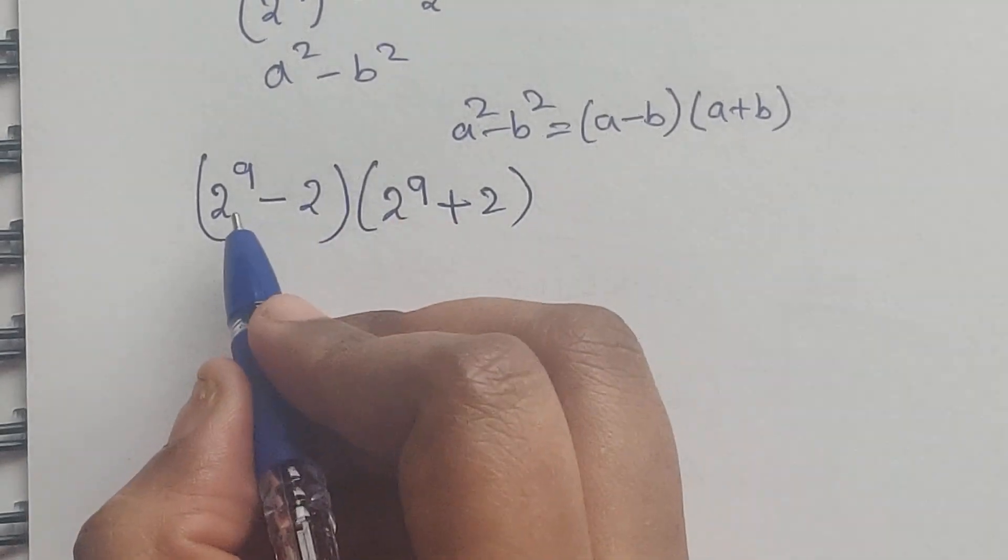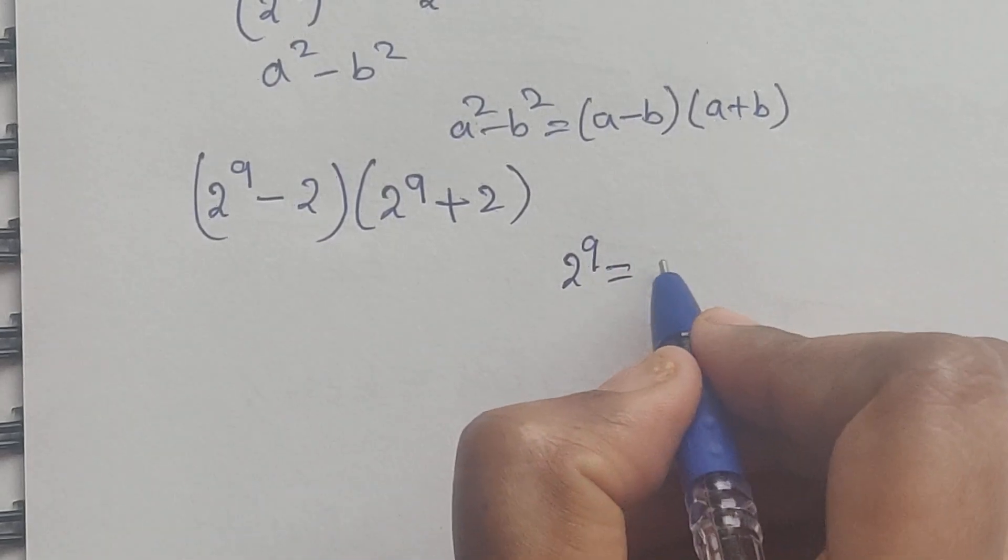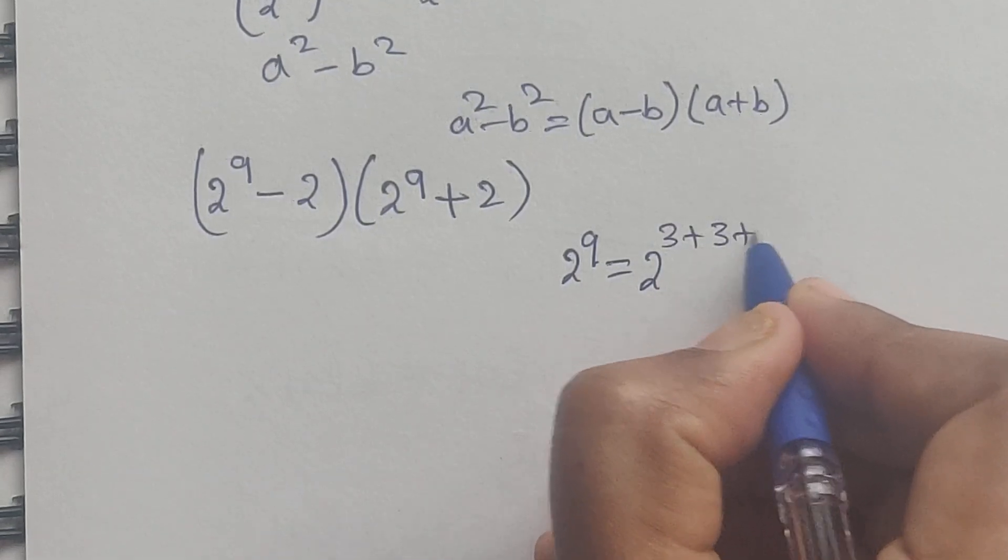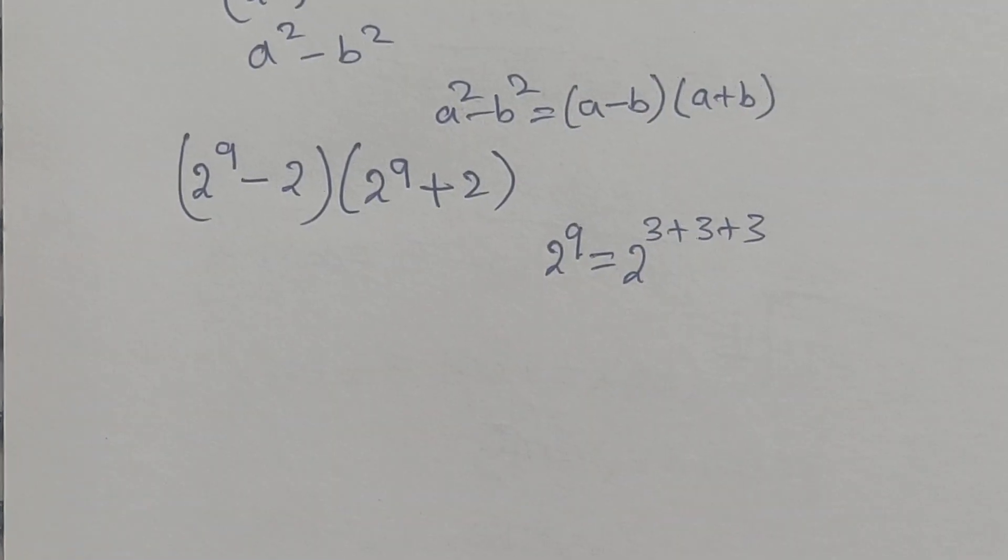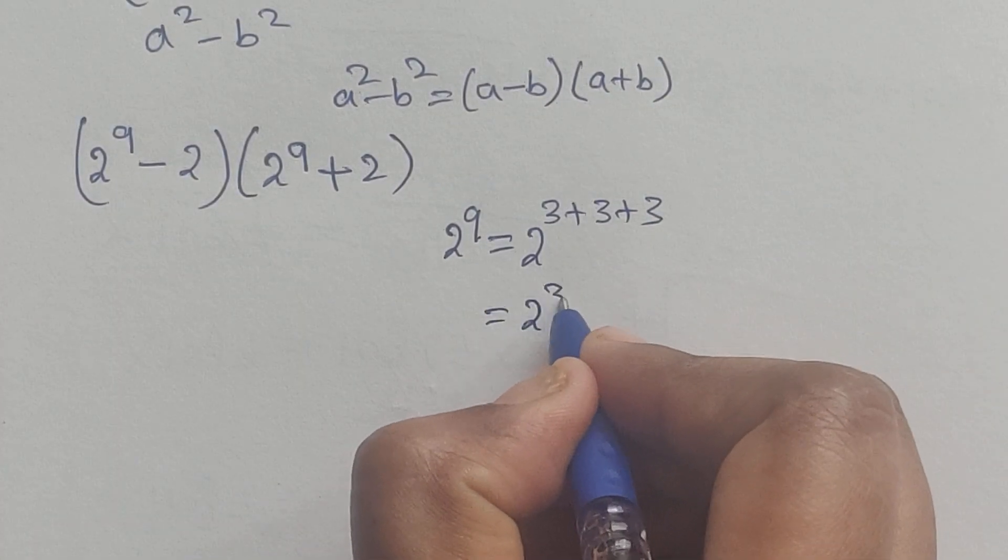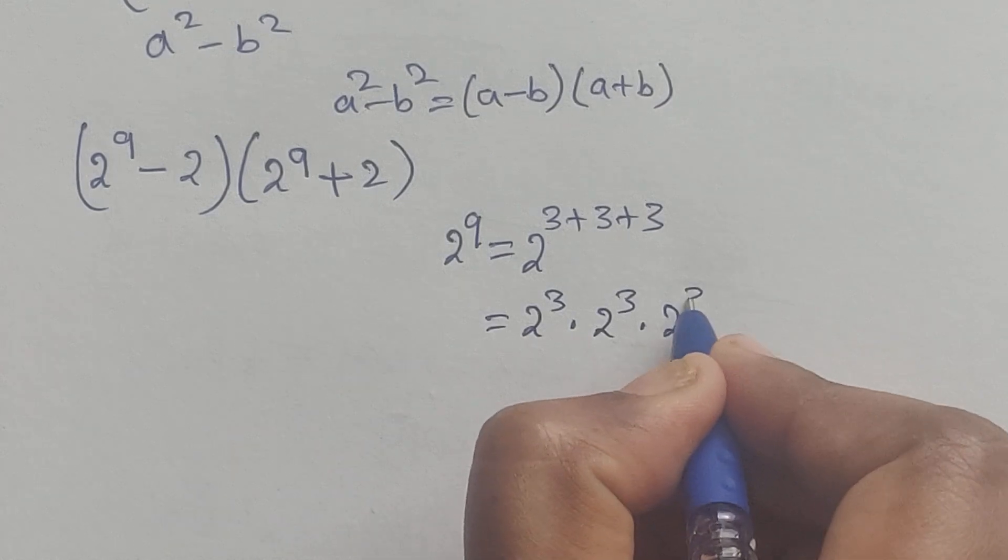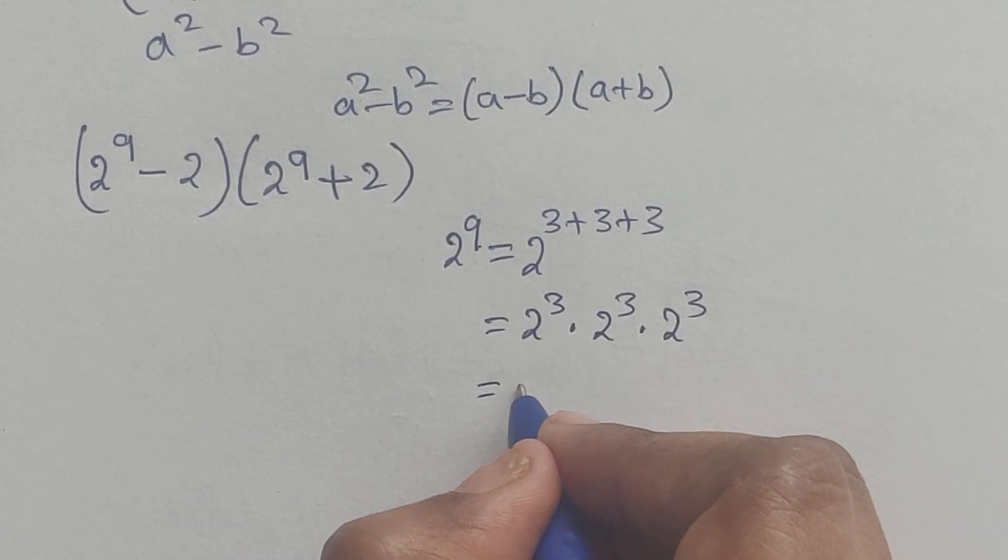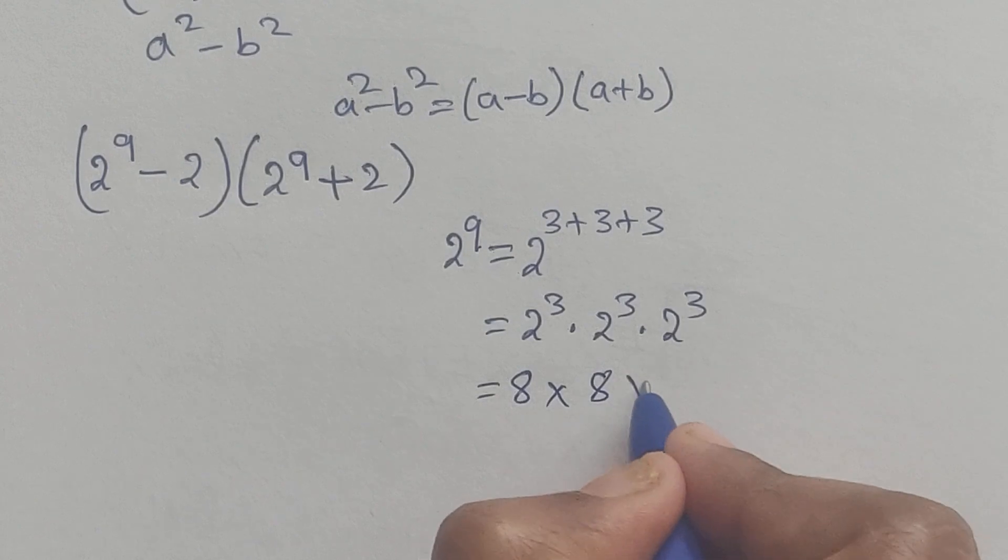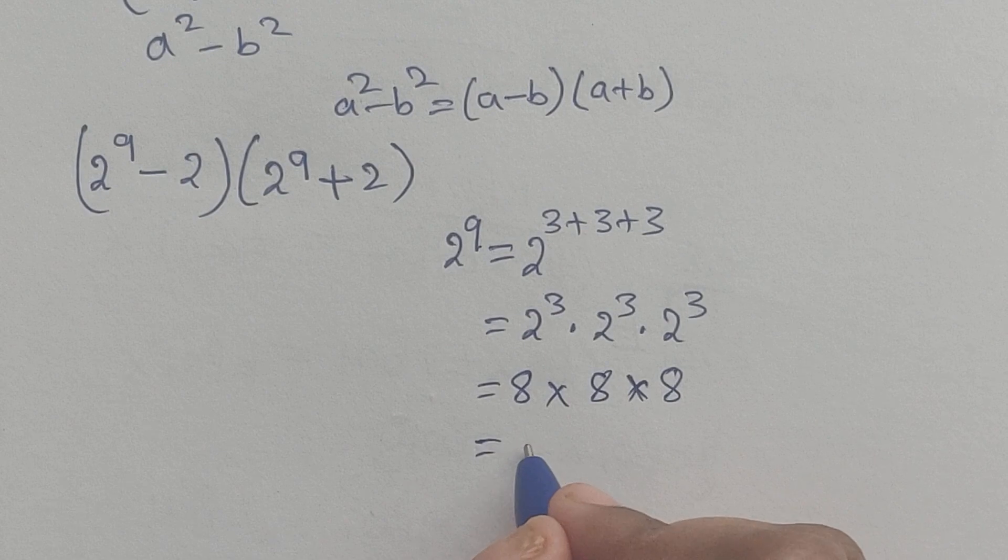So now, 2^9 equals... we can write this as 2^(3+3+3), which equals 2^3 times 2^3 times 2^3.